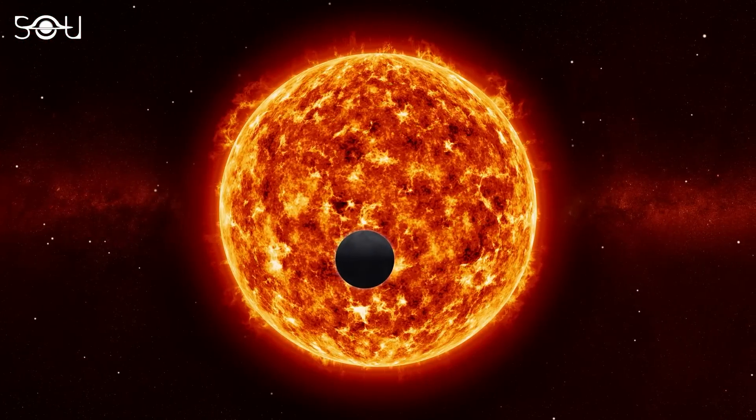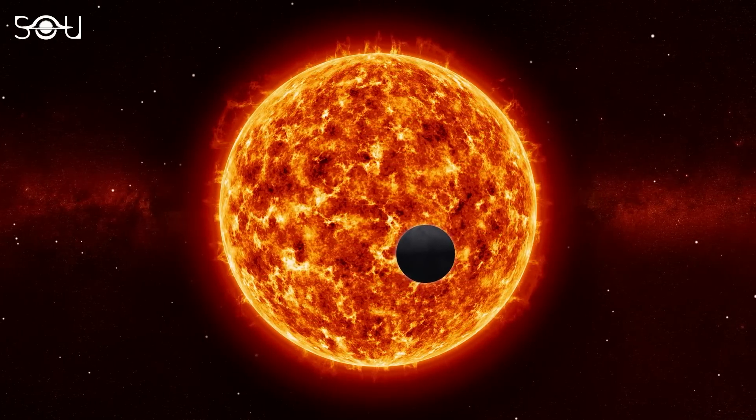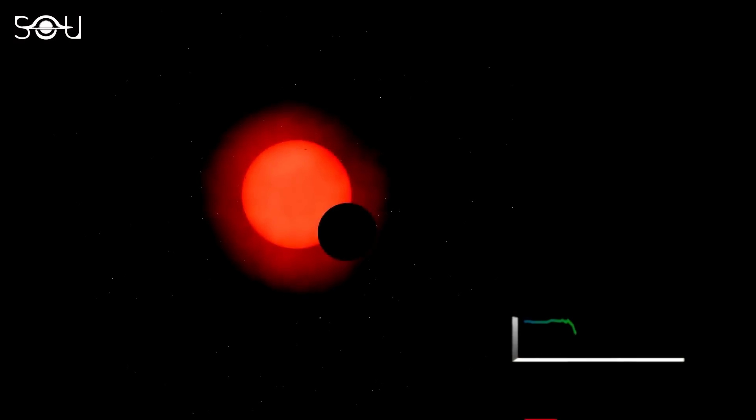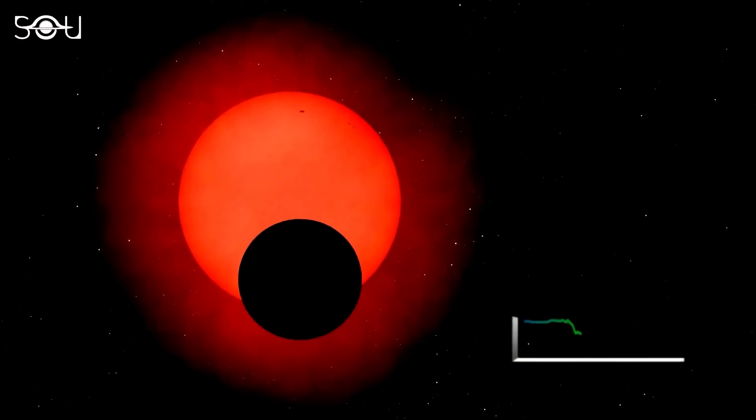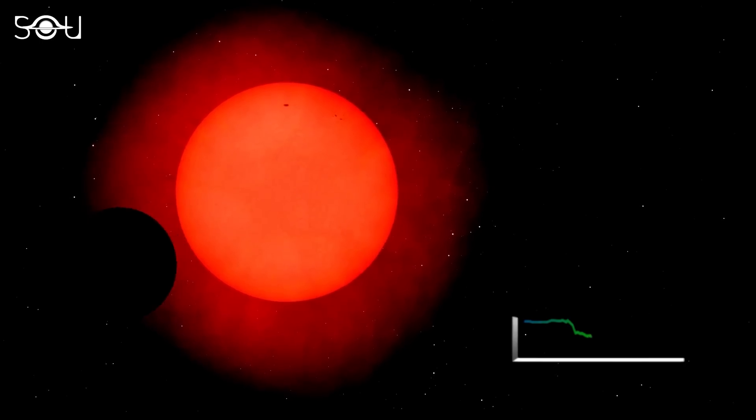Webb will also find exoplanets via the traditional transit method, along with direct imaging. The transit method involves looking for the dimming of starlight as its planet passes across the stellar disk, as seen from the Earth.